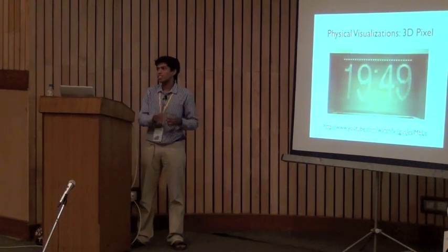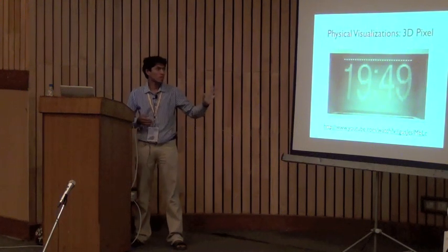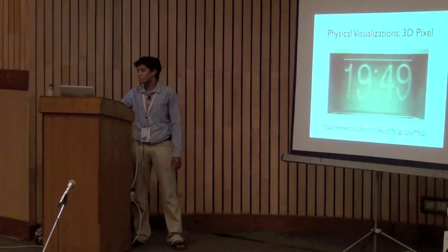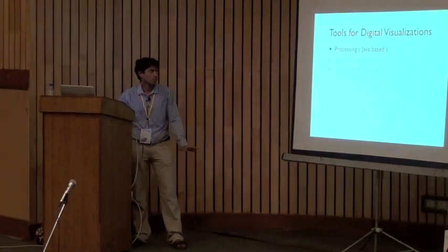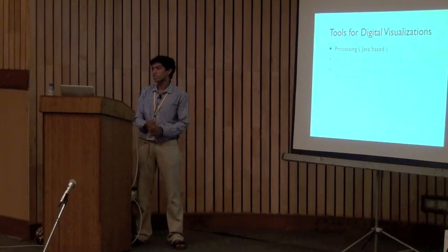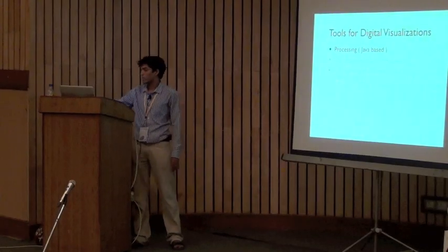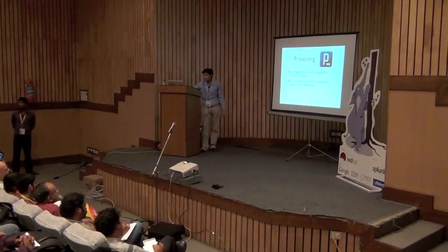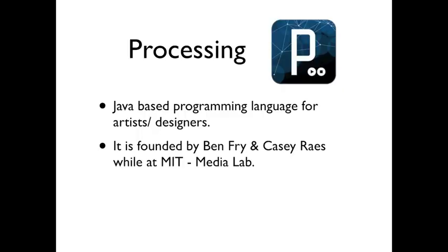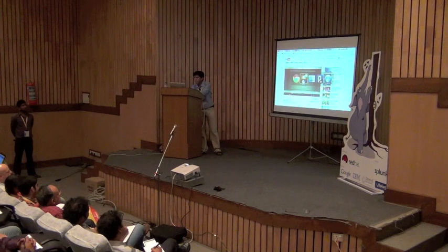I've almost come to the second part of my talk where I'll be speaking about a digital tool called Processing, which can be used to make digital visualizations. Processing is a Java-based scripting tool — Java is object-oriented and has a lot of common support. There are equivalent frameworks: in C++ it's called OpenFrameworks, and there are many JavaScript libraries as well. Processing is a Java-based programming language for artists and designers, founded by Ben Fry and Casey Reas while at the MIT Media Lab.